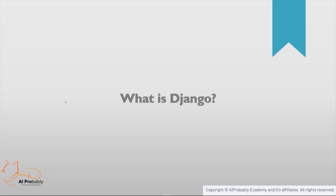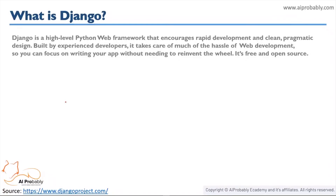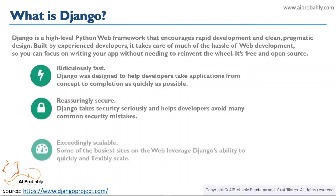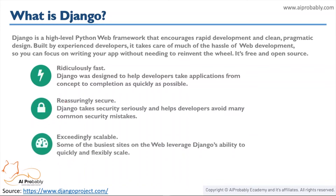So what is Django? Django is a high-level Python web framework that encourages rapid development and clean, pragmatic design. Built by experienced developers, it takes care of much of the hassle of web development so you can focus on writing your apps without needing to reinvent the wheel. It is free and open source. The key features of Django are that it is ridiculously fast, reassuringly secure, and exceedingly scalable.